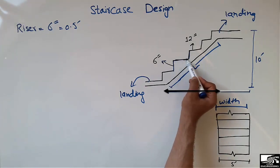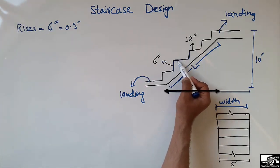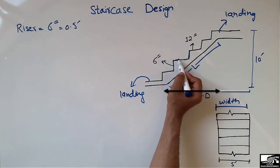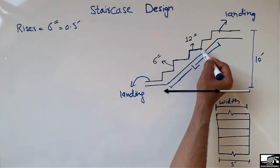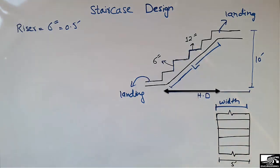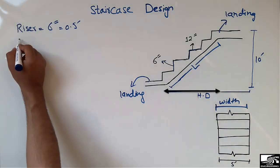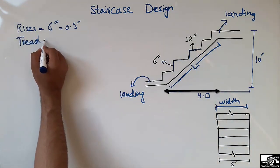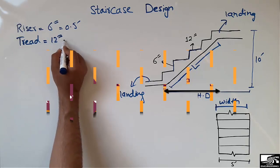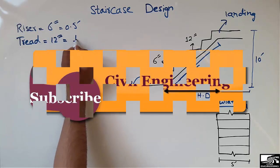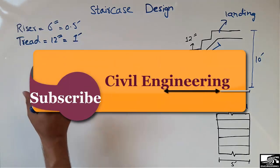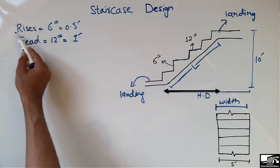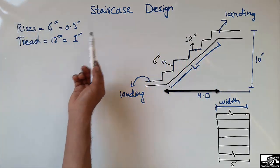The horizontal surface on which you put your feet while moving is known as the tread. It is given here as 12 inches, so the tread in this case is 12 inches or 1 foot. Generally the tread range is between 8 to 12 inches, while the riser range is 4 to 6 inches.